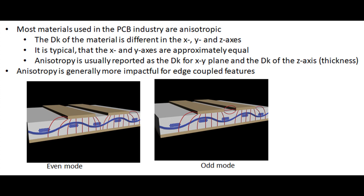Anisotropy is more impactful on coupled features. For a microstrip transmission line — a single-ended line — anisotropy really doesn't matter much. But for coupled features in a microstrip, there are two different modes of operation: even mode and odd mode. In even mode, the fields shown by the red lines use the Z axis dielectric constant. In odd mode, the red lines also use the Z axis, but there are coupling fields between the two signal traces that pick up the XY plane dielectric constant. So coupled features can be affected by anisotropy, while single-ended features such as a transmission line are not.